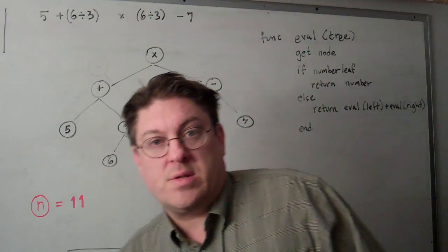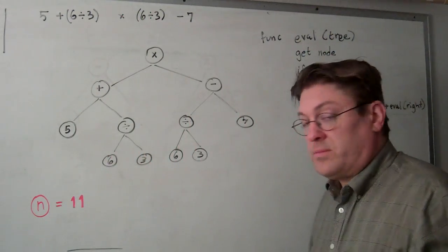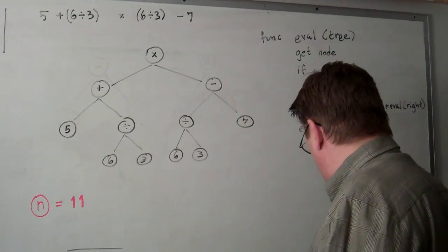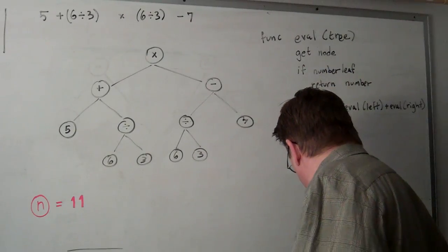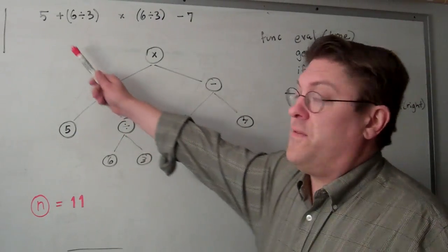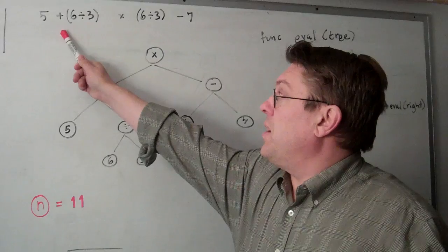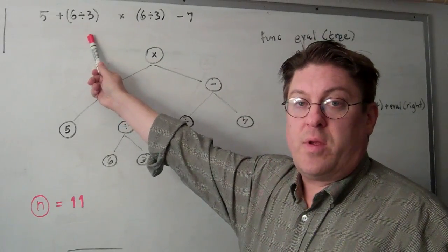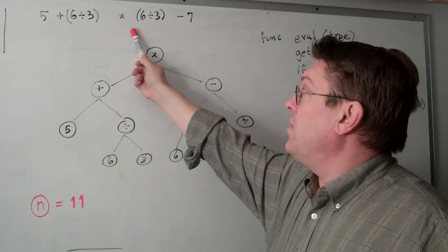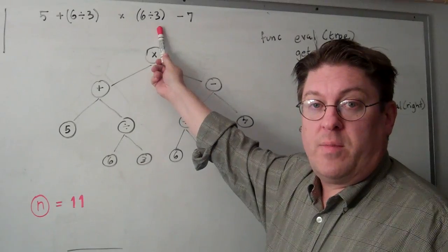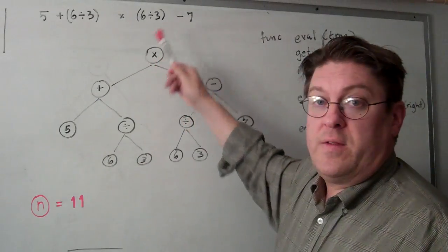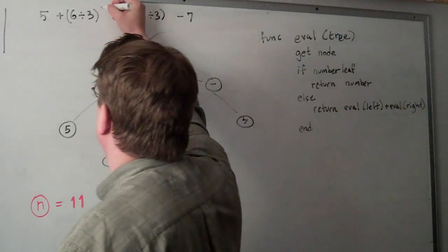Now let's take a look at this here. I wrote an expression: here we have 5 plus the quantity 6 divided by 3 times the quantity 6 divided by 3 minus 7, and these should have parentheses here.